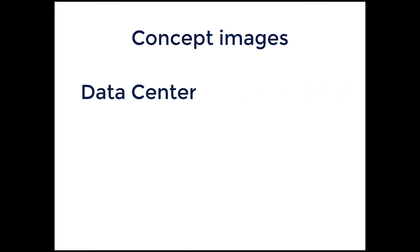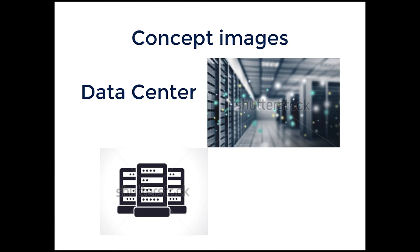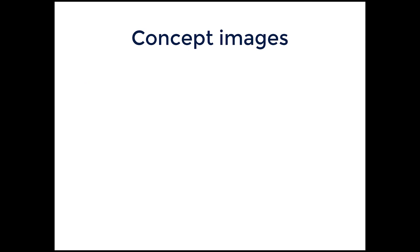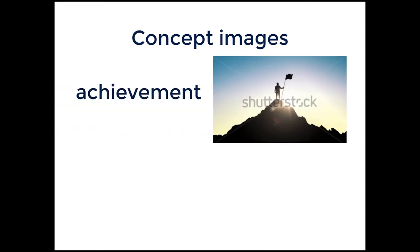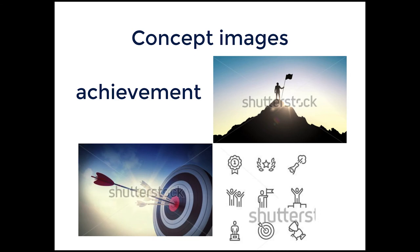Concept images are ones that don't have a set specific visual, so the artist has to come up with something they think conveys that concept. For example, a data center is something tangible but hard to show beautifully — this photographer really did that well with this image. This vector artist drew a very simplified version, and here's another version from a different vector artist. Achievement is another concept that's hard to portray visually, but this guy at the top of a mountain and hitting the center of a target are good examples. This vector artist shows many different ways to portray achievement in visual form.